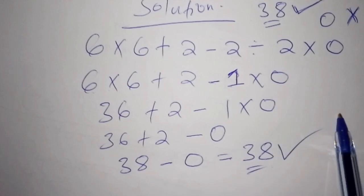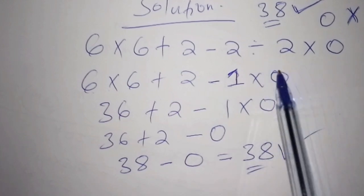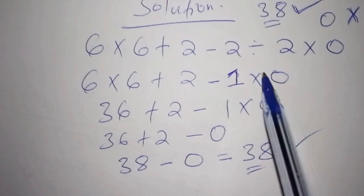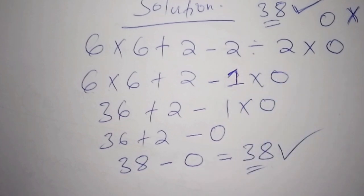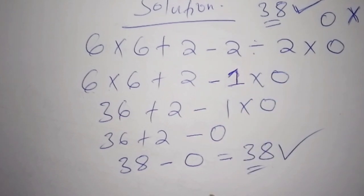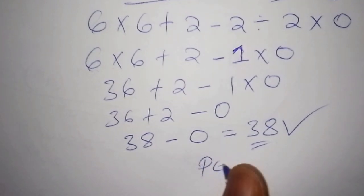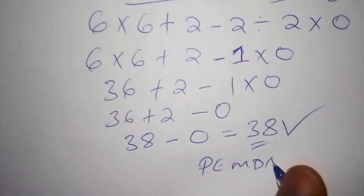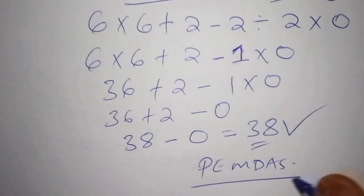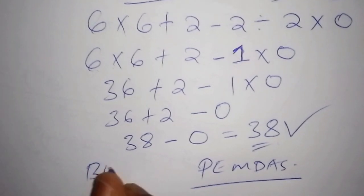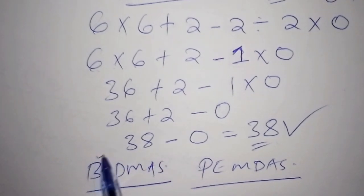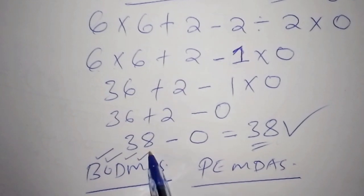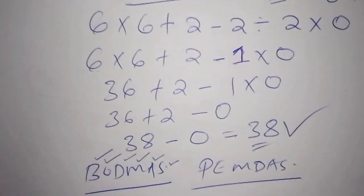When working out a maths problem, you always begin with division when there is no bracket. Then you move to multiplication, then addition, then subtraction. That is why we have what is called BODMAS — or PEMDAS — which guides us on what to start with. B stands for Bracket, O for Of, then Division, Multiplication, Addition, and Subtraction.